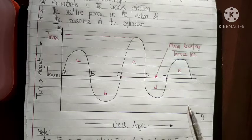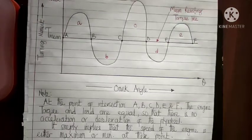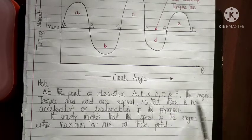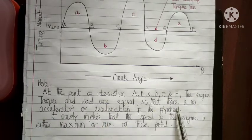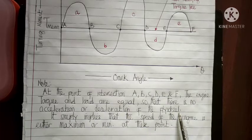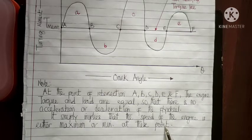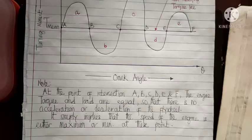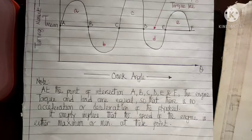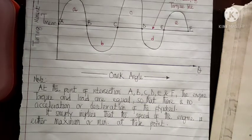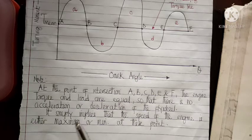At the points of intersection A, B, C, D, and F, the engine torque and the load are equal, so there is no acceleration or deceleration of the flywheel. This means the speed of the engine is either maximum or minimum at these points. To prevent large fluctuation of speed due to variation in the engine crankshaft torque, a flywheel is incorporated as part of the engine unit. It ensures that energy is absorbed as the speed increases and discharged as the speed falls.